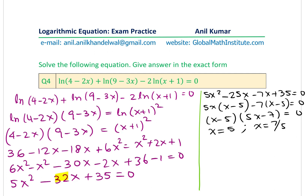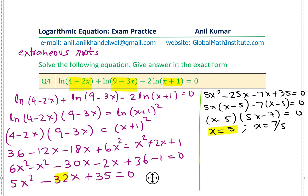An important step is to check the domain, because both solutions may not be valid — we must watch for extraneous roots. Substituting x = 5 into the original equation: (4−2×5) = −6 and (9−3×5) = −6, both negative. Taking ln of a negative number is undefined, so x = 5 is an extraneous root.